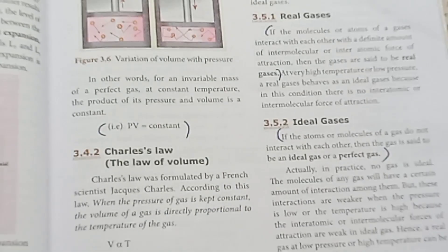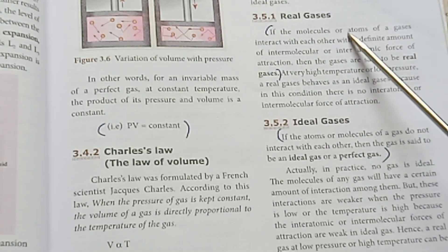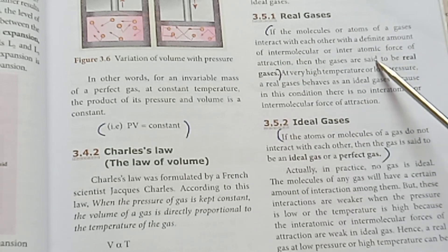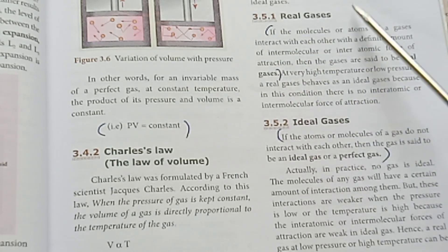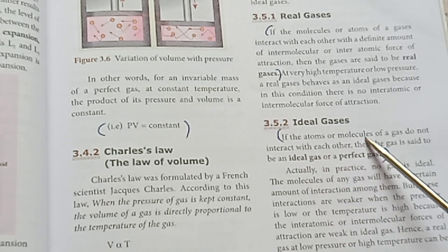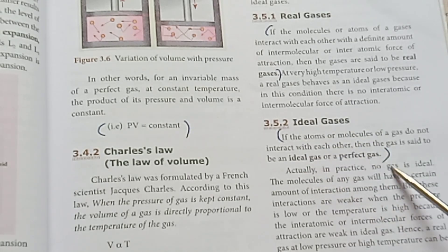Real gas: if the molecules or atoms have intermolecular forces, they are said to be real gases. Ideal gas: if the atoms or molecules behave as a perfect gas with no intermolecular forces.